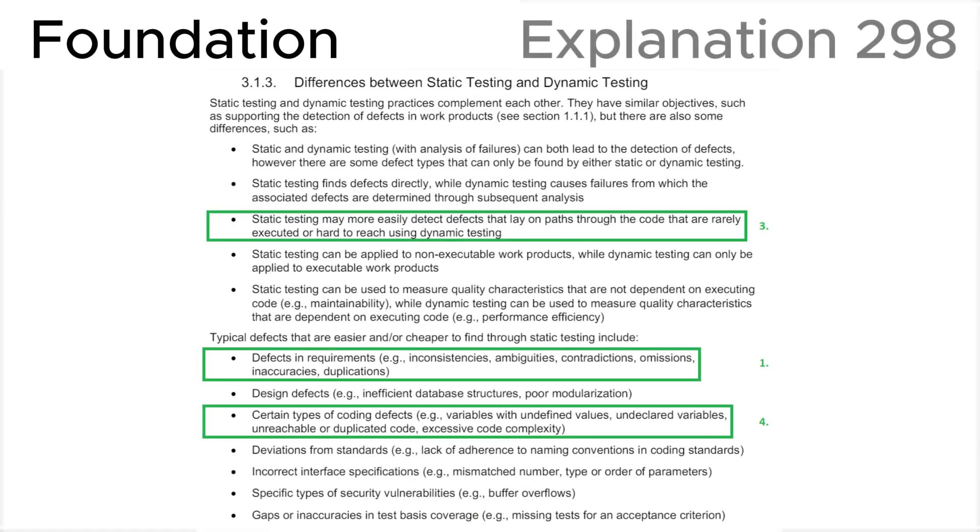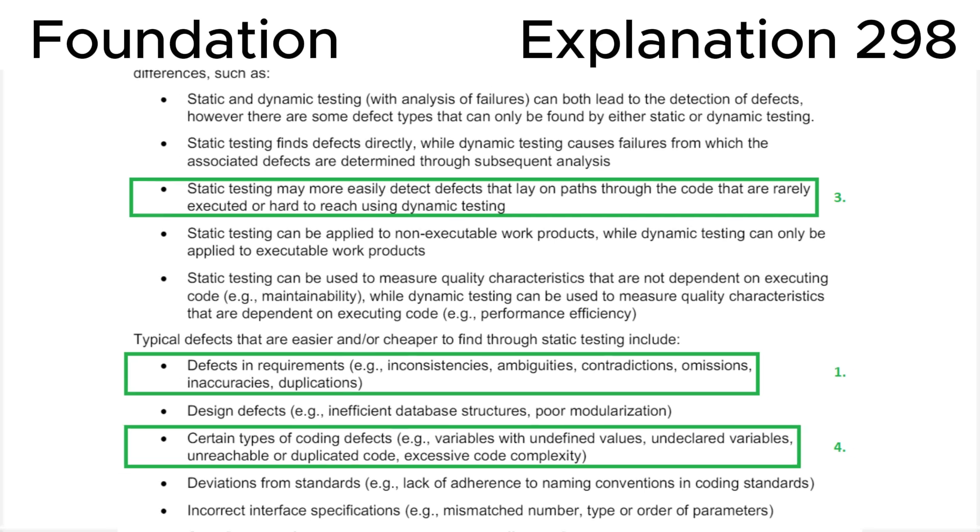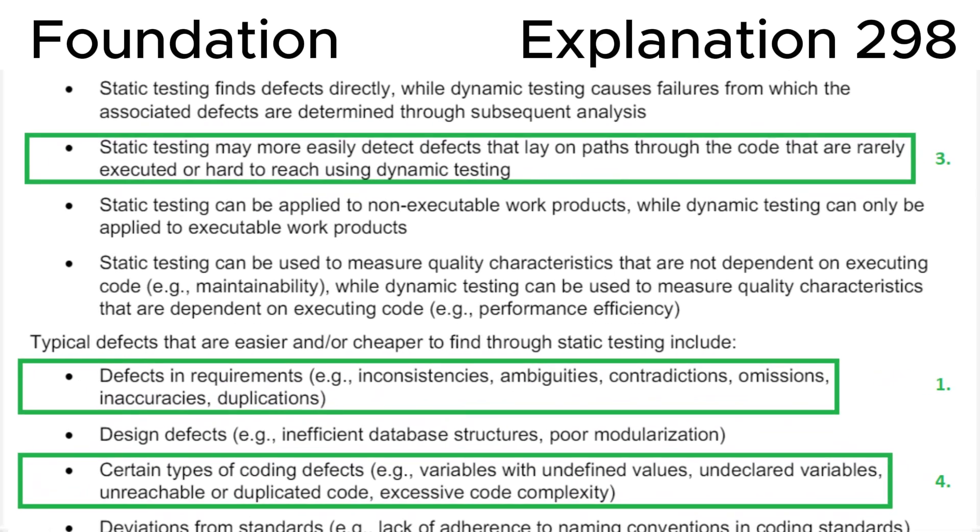Finally, let's look at section 3.1.3, differences between static testing and dynamic testing in the ISTQB syllabus, where we can see that static testing may more easily detect defects that lay on paths through the code that are rarely executed or hard to reach using dynamic testing. Typical defects that are easier and or cheaper to find through static testing include: